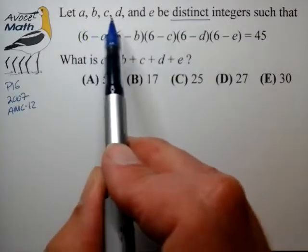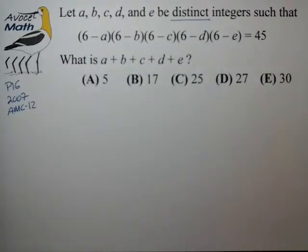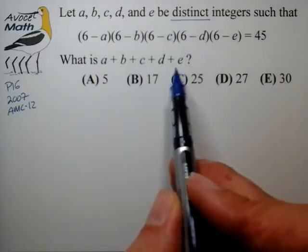So we have A, B, C, D, and E are distinct integers such that this product is equal to 45 and we're trying to solve for the sum A through E.